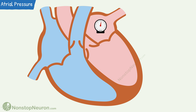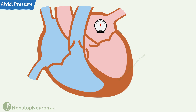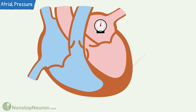Then the semilunar valves open and ejection of blood starts. The contraction of ventricular musculature during this pulls atrioventricular valves towards the ventricles, which results in a fall in pressure in the atria. During all this, the atria are continuously receiving blood, and this filling causes a gradual increase in pressure.